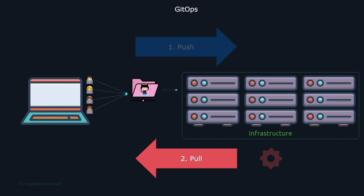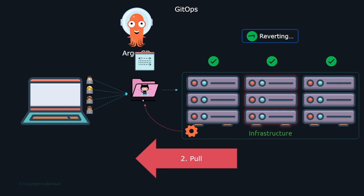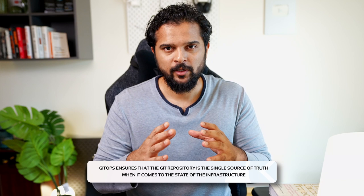One of the tools that implement this mechanism is Argo CD. With Argo CD, we add an agent into the infrastructure that connects to the Git repo and continuously pulls for changes. When it detects changes, it pulls the latest updates and applies them to the infrastructure. It always ensures that the state defined in the Git repository is the same as the state in the actual infrastructure. For example, if someone were to manually make a change in the infrastructure, Argo CD will detect the discrepancy and revert those changes — making Git the single source of truth. GitOps ensures that the Git repository is the single source of truth for the state of the infrastructure.